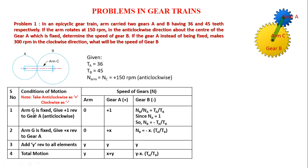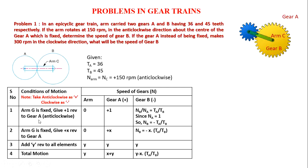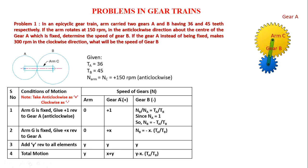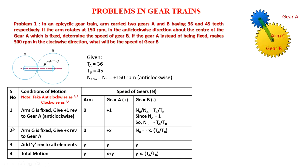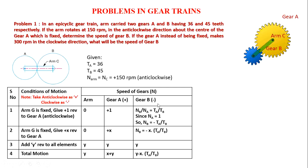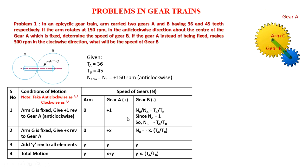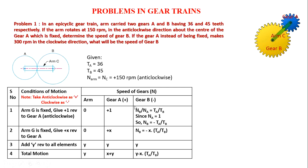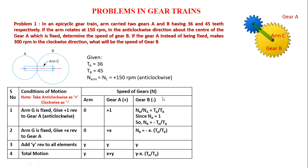First, we fix arm C and give plus one revolution to gear A in the anticlockwise direction. The table columns are: arm C, gear A, gear B. With arm fixed (zero), gear A gets one revolution, and the speed of gear B is determined by the gear ratio: NB/NA = TA/TB. Since NA equals 1, NB equals minus TA/TB. Since the gears rotate in opposite directions, if gear A is plus (anticlockwise), gear B must be minus (clockwise).